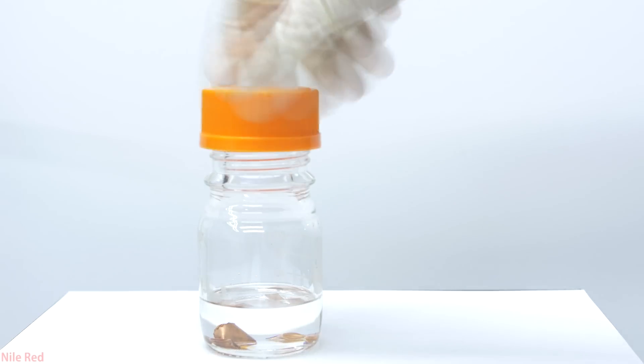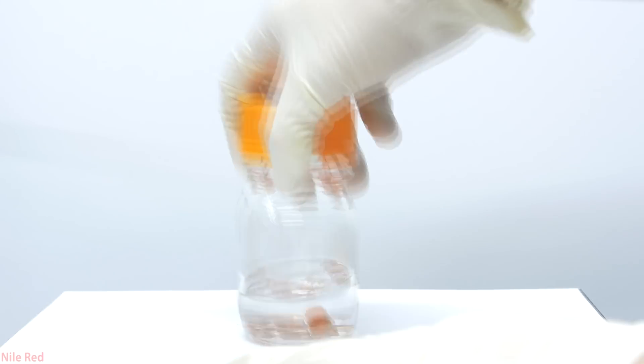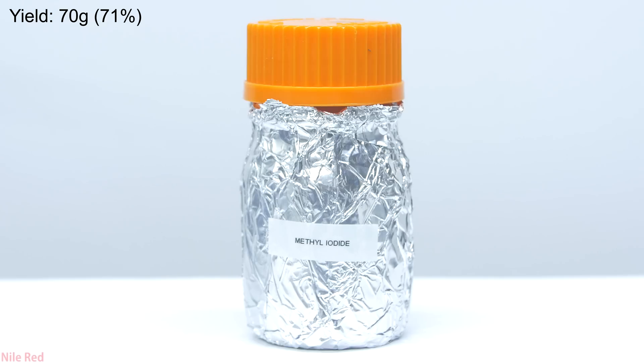Once everything's been added, I remove the funnel and cap it nice and tightly. As I said before, it's sensitive to light, and I didn't have a glass amber bottle, so the next best thing is to wrap it in aluminum foil. The yield in the end was around 70 grams, which represents a percent yield of about 71%, which to me is decent.